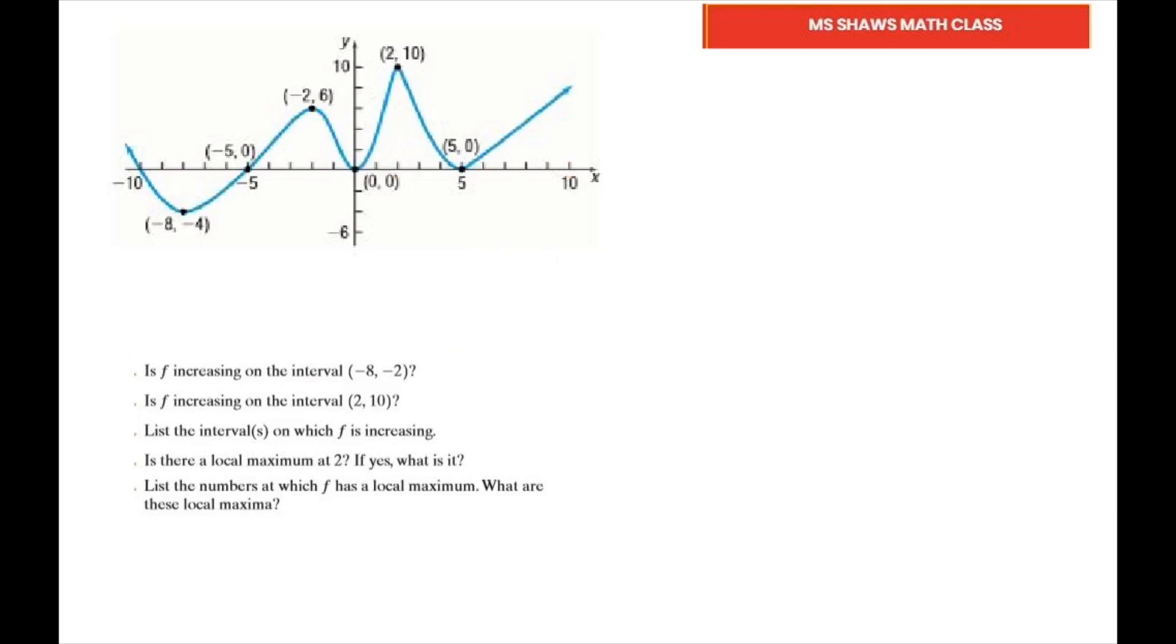List the intervals on which F is increasing. Let's read the graph from left to right. We know it's increasing from -8 to -2. It's also increasing from 0 to 2, right here. And also from 5 to infinity.